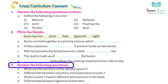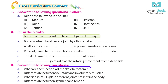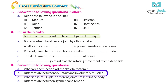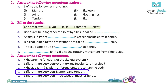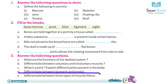Answer the following questions: A. What are the functions of the skeletal system? B. Differentiate between voluntary and involuntary muscles. C. What is a joint? Explain the different joints present in the body. D. Differentiate between ligament and tendon. E. Differentiate between the three types of muscle fibers.